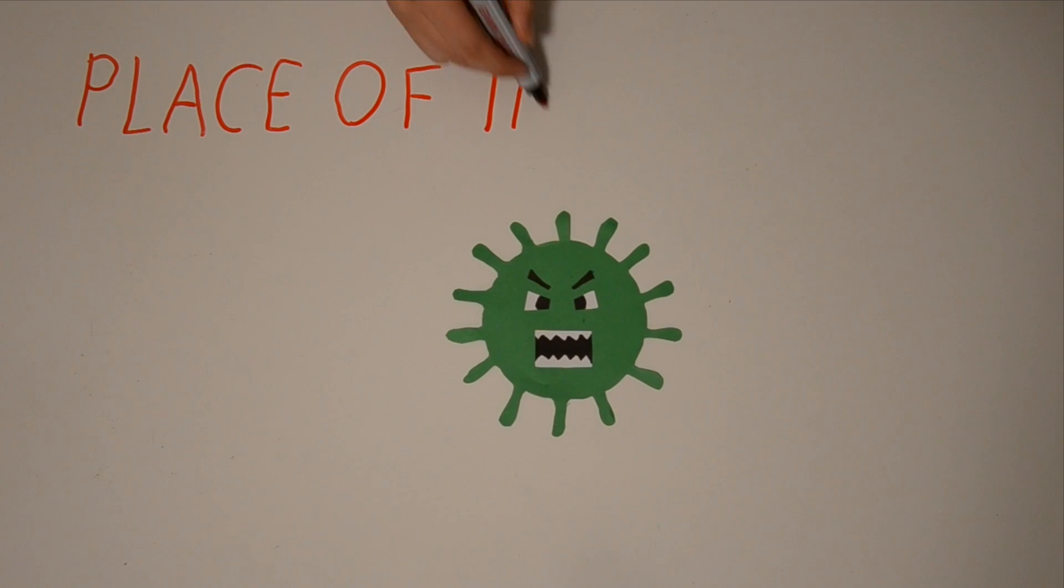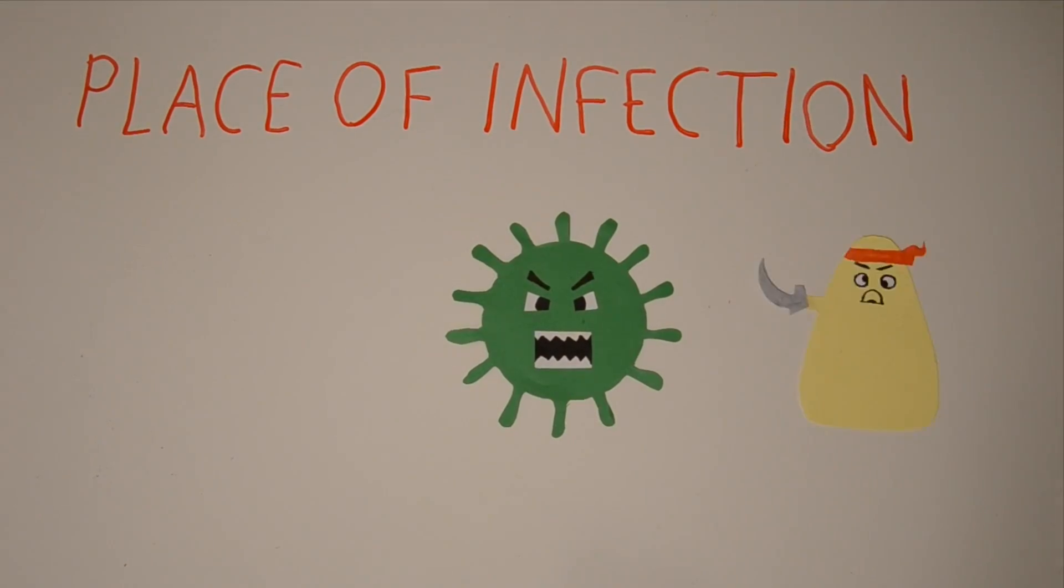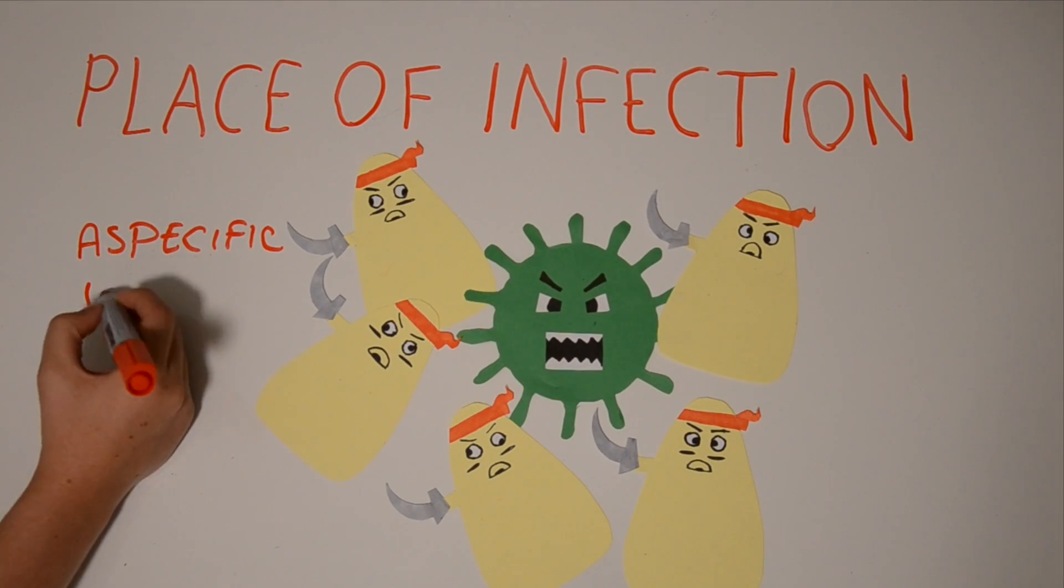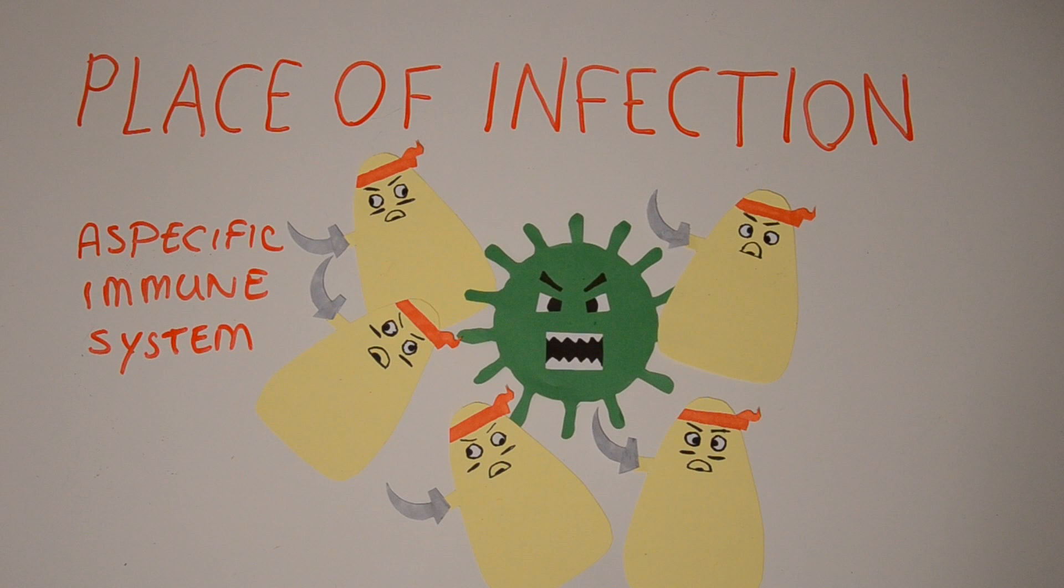In the body, the pathogens will be recognized and attacked by cells of the A-specific immune system. This system consists of different cell types that can either attack the pathogen or report this intrusion to the specific immune system.